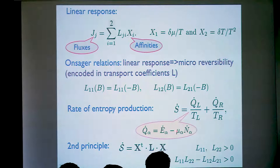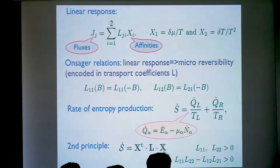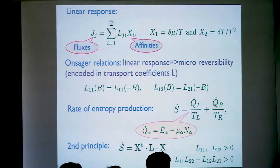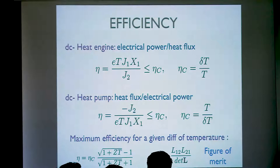In the case of electrons, the relation between heat and energy involves subtracting the so-called convective term, which is the chemical potential times the flux of particles. If we plug this linear relation for the fluxes as a function of the affinities, we have this bilinear relation for the rate of entropy production. In order for it to be positive, we need these coefficients to be positive, and also this other combination to be satisfied, in addition to the Onsager relations.